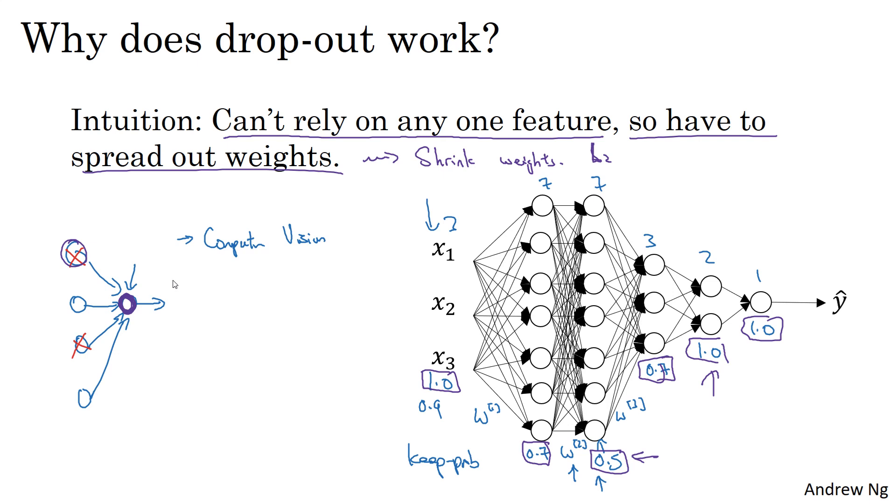So it's used somewhat less often in other application areas. There's just in computer vision, you usually just don't have enough data, so you're almost always overfitting, which is why there tend to be some computer vision researchers to just swear by dropout. But the intuition doesn't always generalize, I think, to other disciplines.